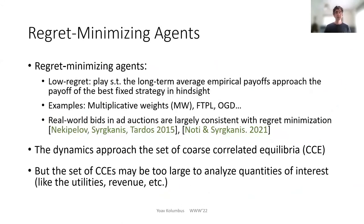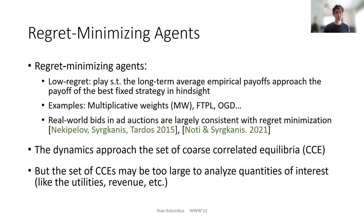The types of learning agents we consider are regret-minimizing agents, which means they play such that the long-term average empirical payoffs approach the payoff of the best fixed strategy in hindsight — so they do not regret not playing that fixed strategy. There are many well-known examples, like multiplicative weights, follow the perturbed leader, online gradient descent, and so on. Importantly, it has been shown that real-world bids in these ad auctions are largely consistent with the regret-minimization model.